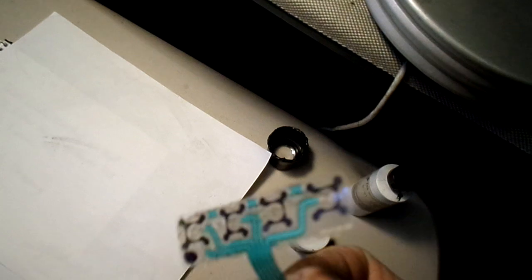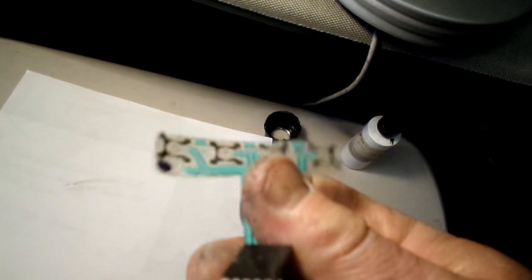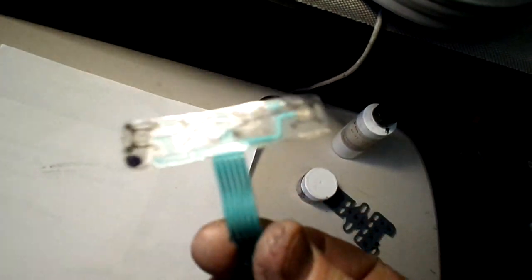I knew it was going to be a challenge to fix because the contact points were in such bad shape and the company wasn't willing to sell this part. I thought probably the best thing I could do was build him a small board with four switches on it, and that's what I ended up doing.